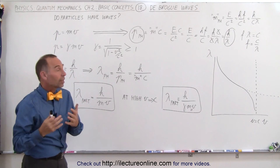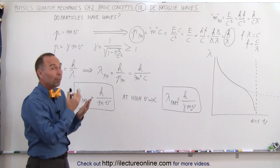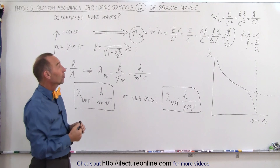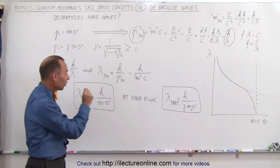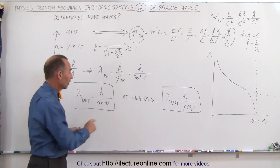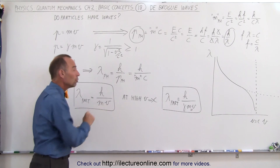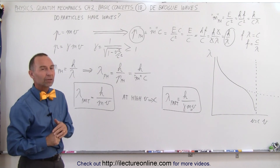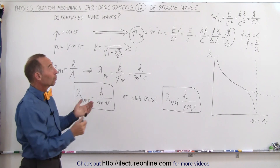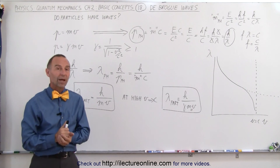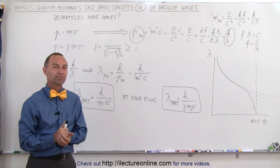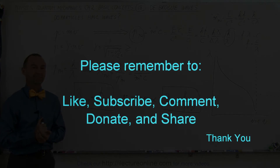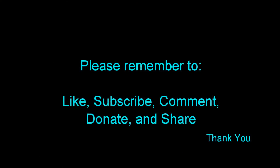So that's what de Broglie meant by particles acting like waves, acting like photons. The smaller the mass and the faster they move, the smaller the wavelength of the particles. And that's what we mean by de Broglie waves.